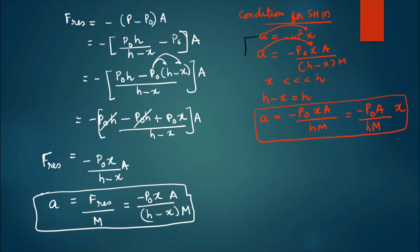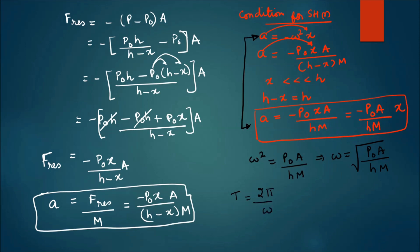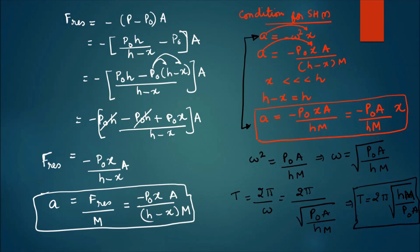Comparing with a = −ω²·x, we get ω² = p0·A / (h·m), so ω = √(p0·A / h·m). Since time period T = 2π/ω, we get T = 2π·√(h·m / p0·A). This is the time period of the SHM. The condition for this result is that x must be very small compared to h — meaning only a very small push is applied.